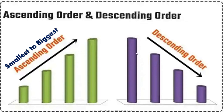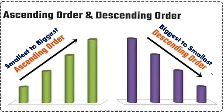Vice versa — here you can see the purple poles. First the tallest pole, then a little smaller, smaller, and then the smallest. That is called descending order — from biggest to smallest. When writing numbers, we write the largest number first, then slowly move towards the smallest number. This is ascending order and descending order.